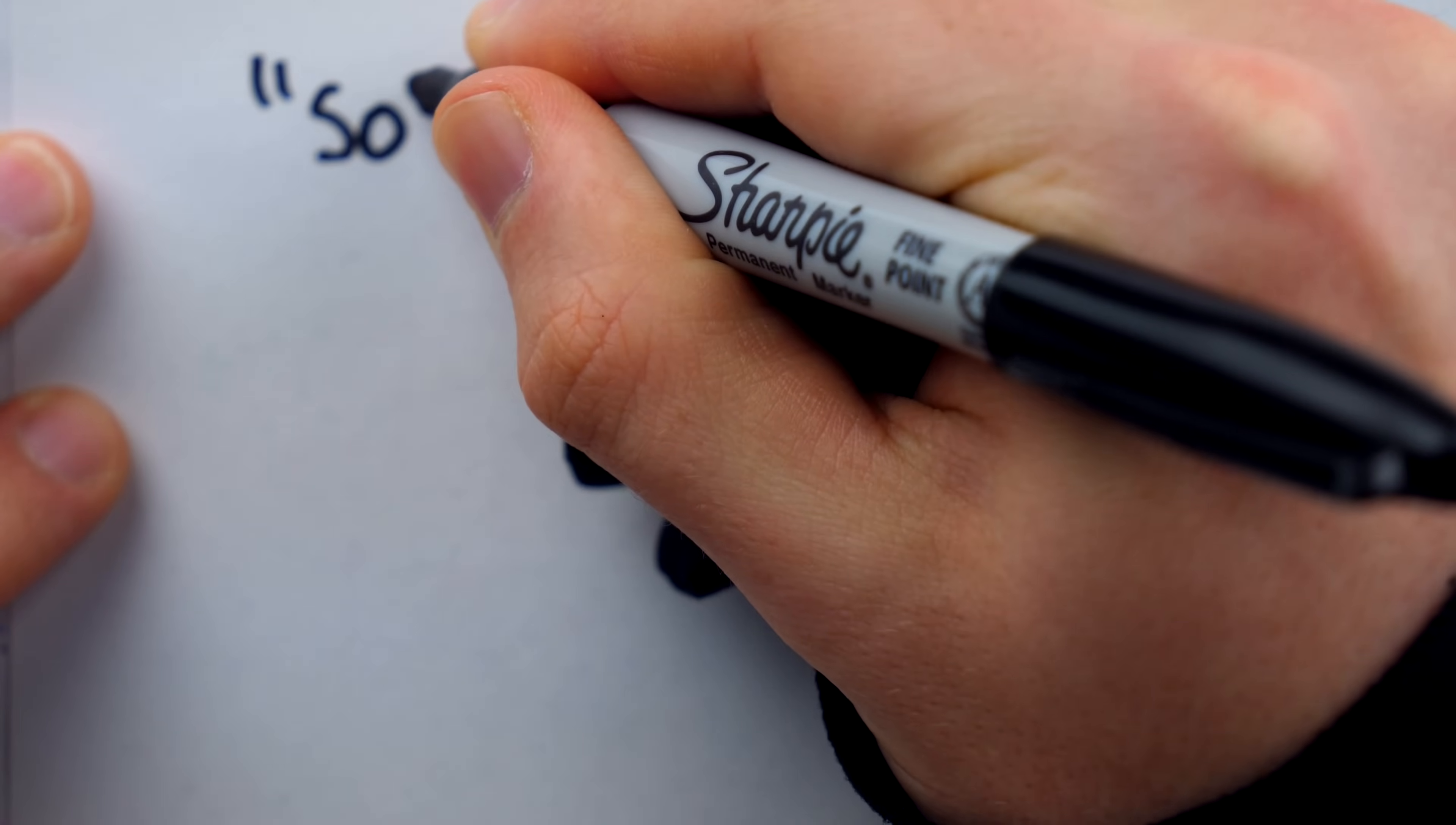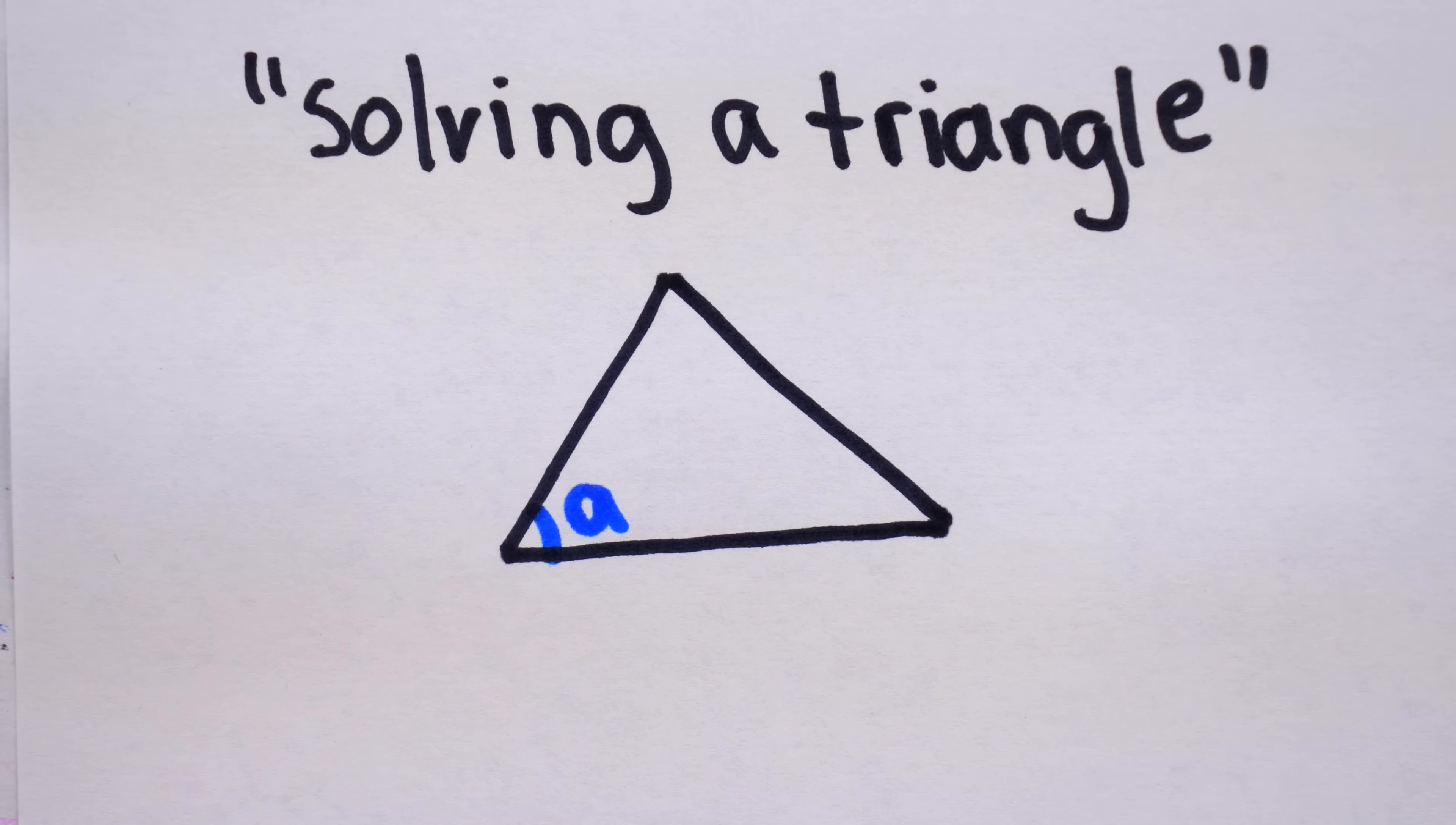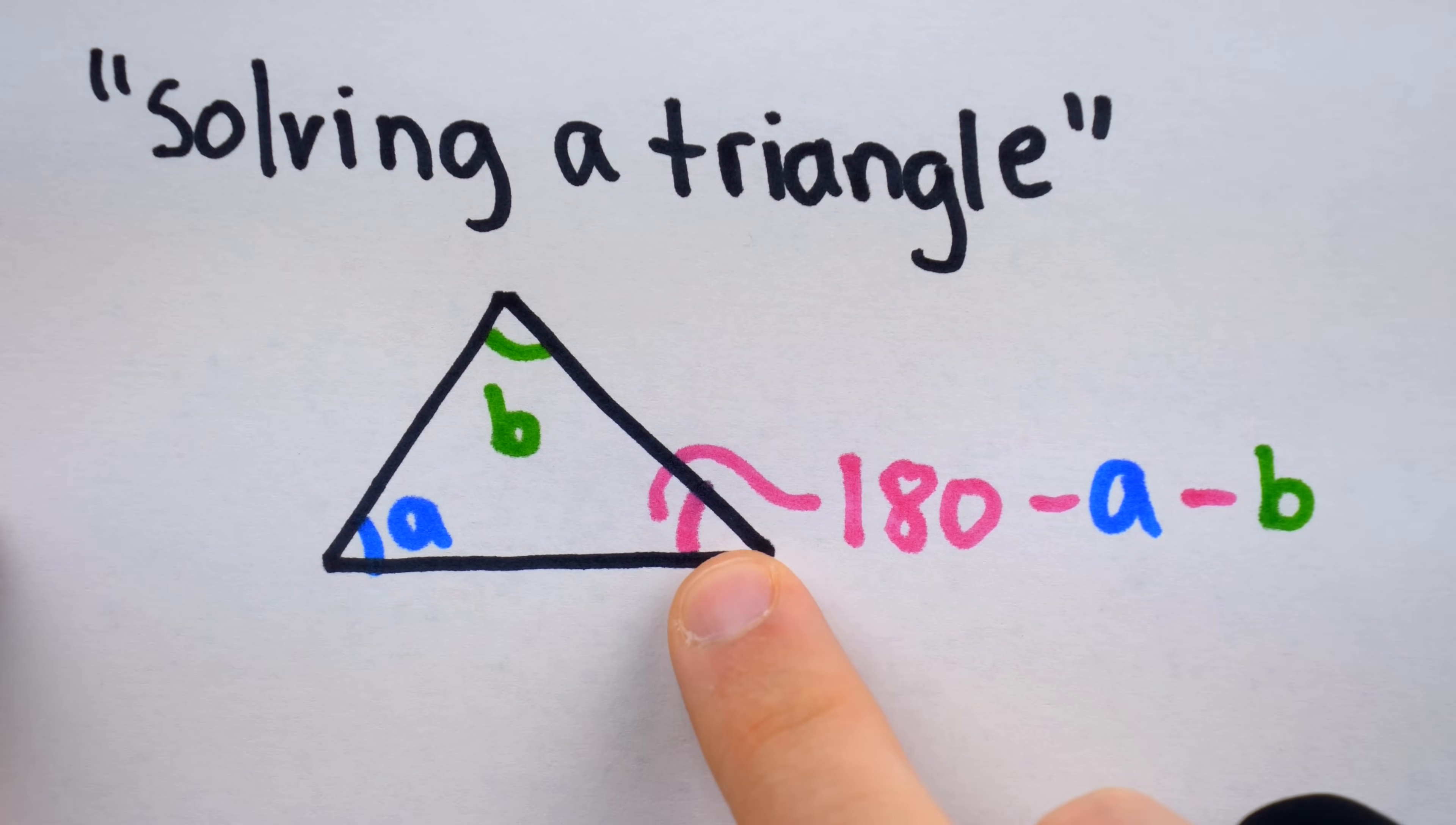You see, there is a long-beloved practice in mathematics called solving a triangle. This is the art of taking things we know about a triangle and using that information to find out other things about the triangle. For example, here is a triangle, and like all triangles, it has three angles. If I tell you that the measure of this angle is A degrees, this angle up here is B degrees, then I bet you could tell me the measure of this third angle.